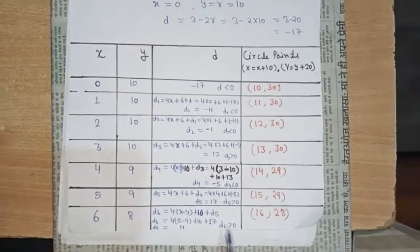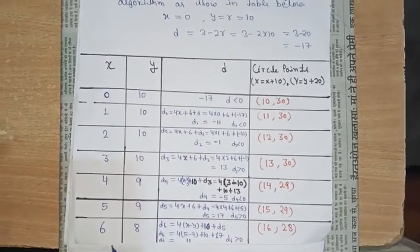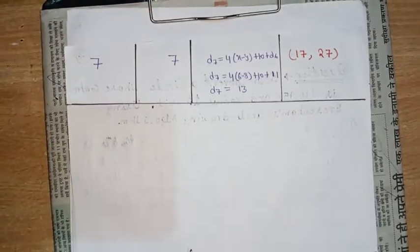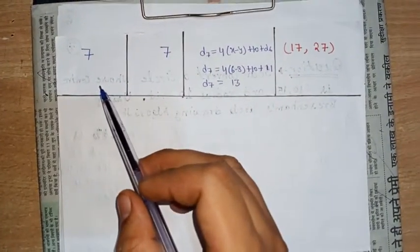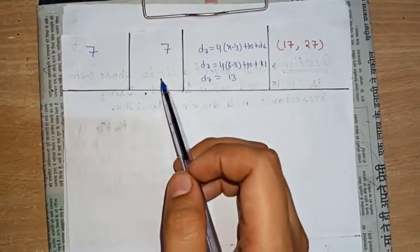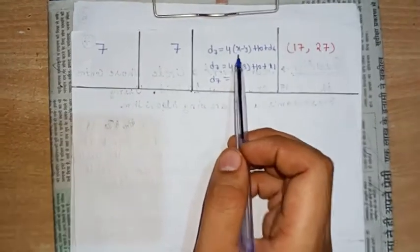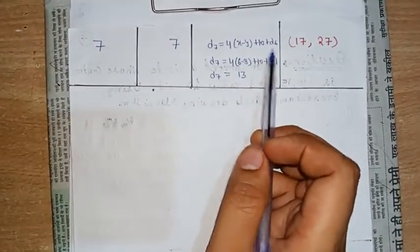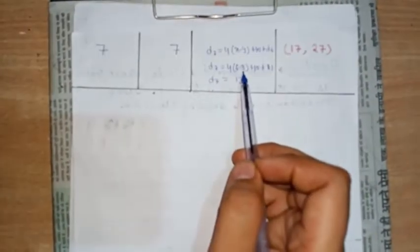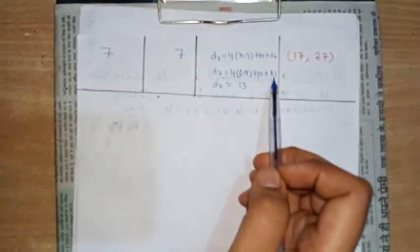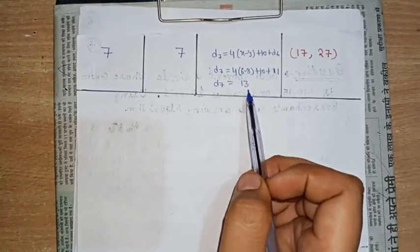d6 = 11 is greater than 0. So x-axis gets an increment: 6 becomes 7. And y-axis gets a decrement: 8 becomes 7. Then d7 = 4(x - y) + 10 + d6 = 4 into 6 (previous x) minus 8 (previous y) + 10 + 11, giving d7 = 13.